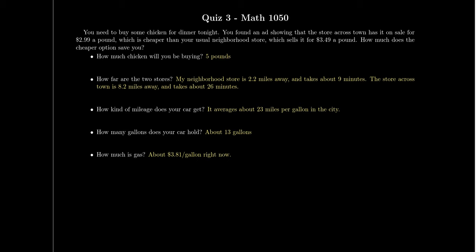Well, how far are the two stores away? Well, the local store that you usually buy, they're both local inside the town here, but the store you usually go to is 2.2 miles away. That usually takes about nine minutes of driving, where it's 2.2 miles one way. The other store, it is 8.2 miles away. So it's 8.2 miles away, and a round trip would take about 26 minutes to drive there and back with the speed limits and things like that.